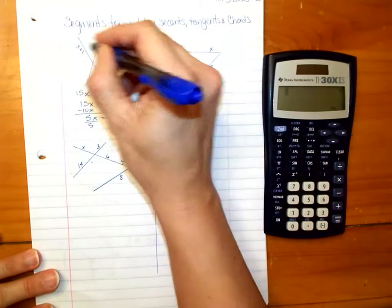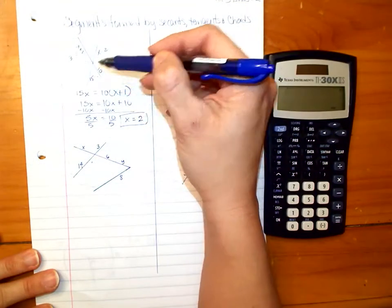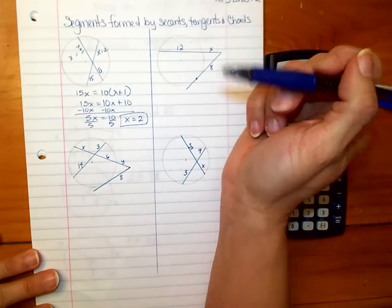So this little part is 2, which makes this part 3, and you can check does 2 times 15, which is 30, equal 3 times 10, which is 30. Yes, it does.